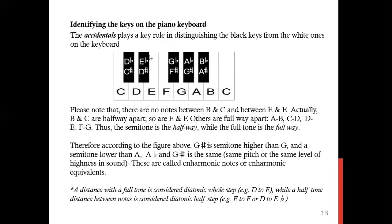Leave the third line — don't draw anything on it. Go to the fourth line and draw a small rectangle on it, then the fifth line, then the sixth line. Leave the seventh line — do not draw anything on it. Now let's name these black keys together.